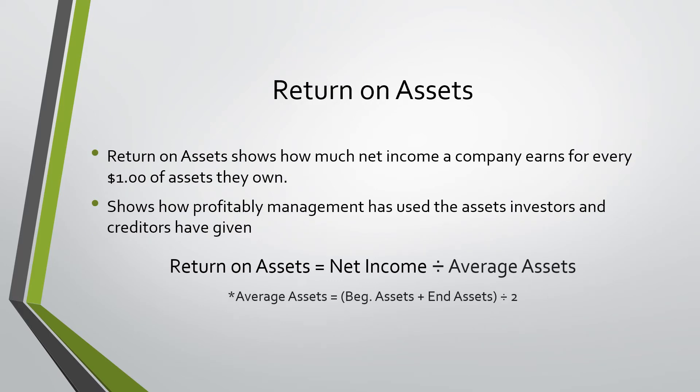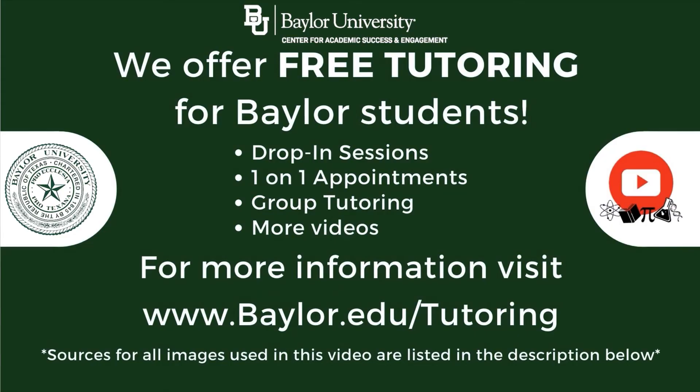Return on assets shows how much net income a company earns for every $1 of assets they own. This shows how profitably management have used assets investors and creditors have given. Return on assets equals net income divided by average assets.